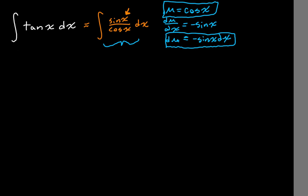Now this is u-substitution after all, so we should probably substitute some things. Notice we've got a cosine of x down here, so that's helpful. But where's our negative sine of x dx? Well, we don't have one — we have a sine of x dx. So we can just multiply the inside by negative one, and multiply by negative one on the outside too, so they cancel out. Now we can clearly see our negative sine of x dx.